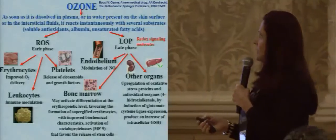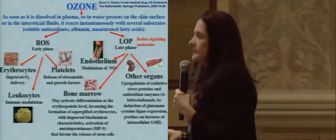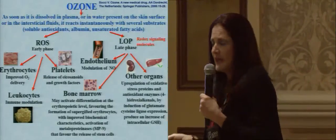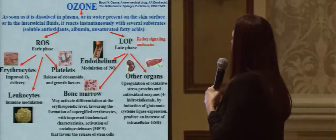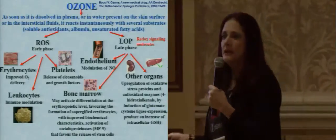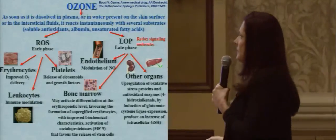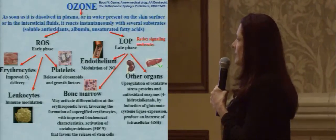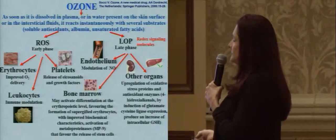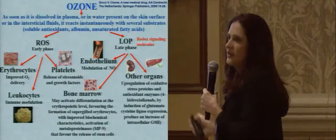Ozone immediately dissolves and disappears. It can dissolve in plasma depending on the way of application, or in water, or in the interstitial fluids. In the early phase, we obtain reactive oxygen species that can go to erythrocytes and improve oxygen delivery, or go to leukocytes and produce immune modulation.